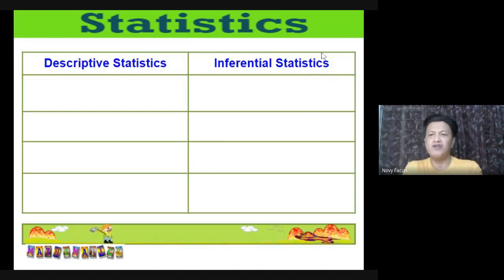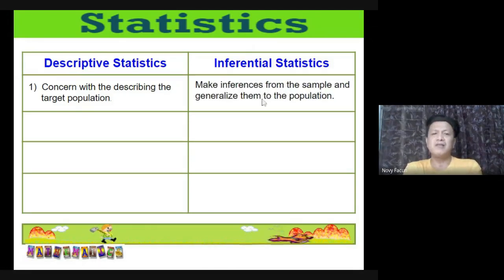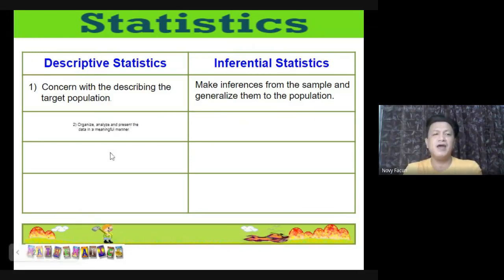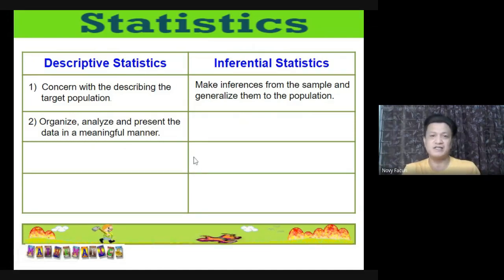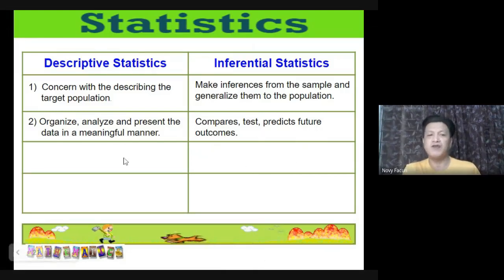The key differences: descriptive statistics is concerned with describing the target population — you only describe data using organized charts and graphs. Inferential statistics makes inferences from the sample and generalizes to the population, requiring prediction and deeper-level interpretation. Descriptive uses measures of central tendency (mean, median, mode) and measures of dispersion (range, standard deviation), while inferential uses hypothesis tests, analysis of variance, and regression analysis.